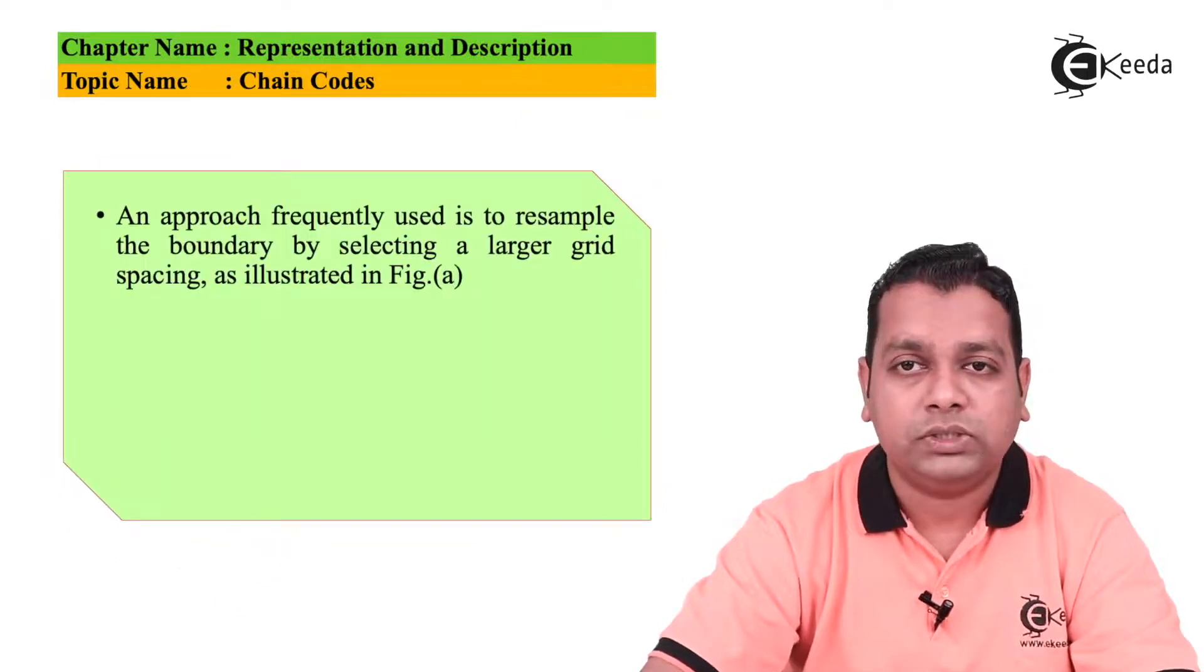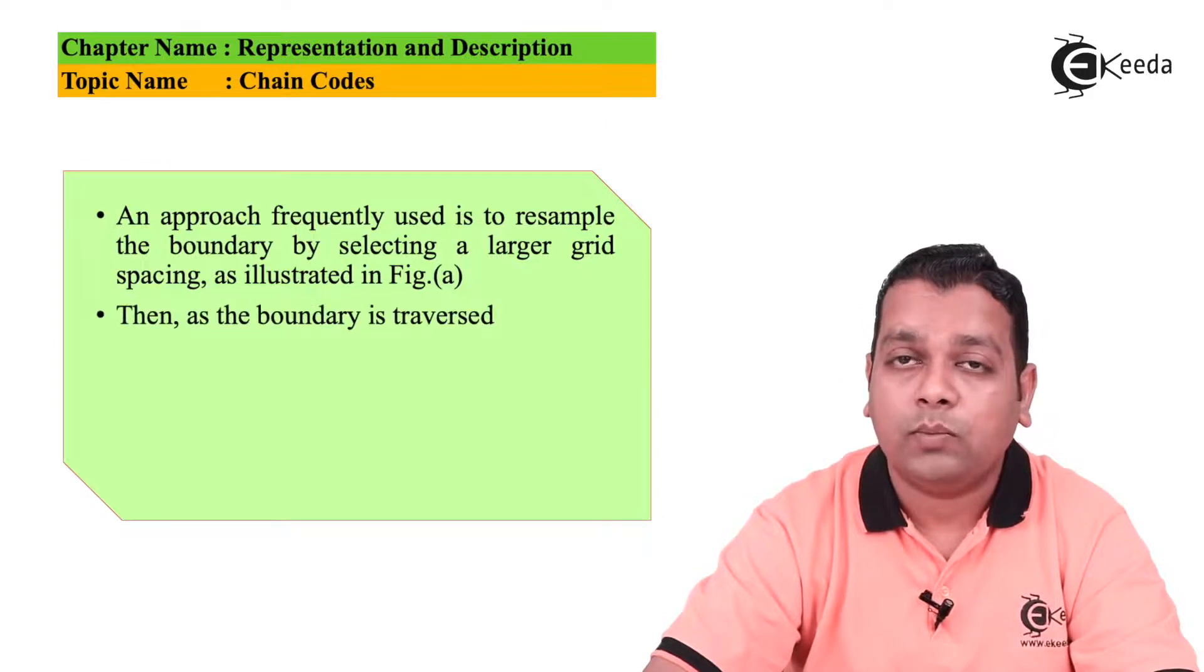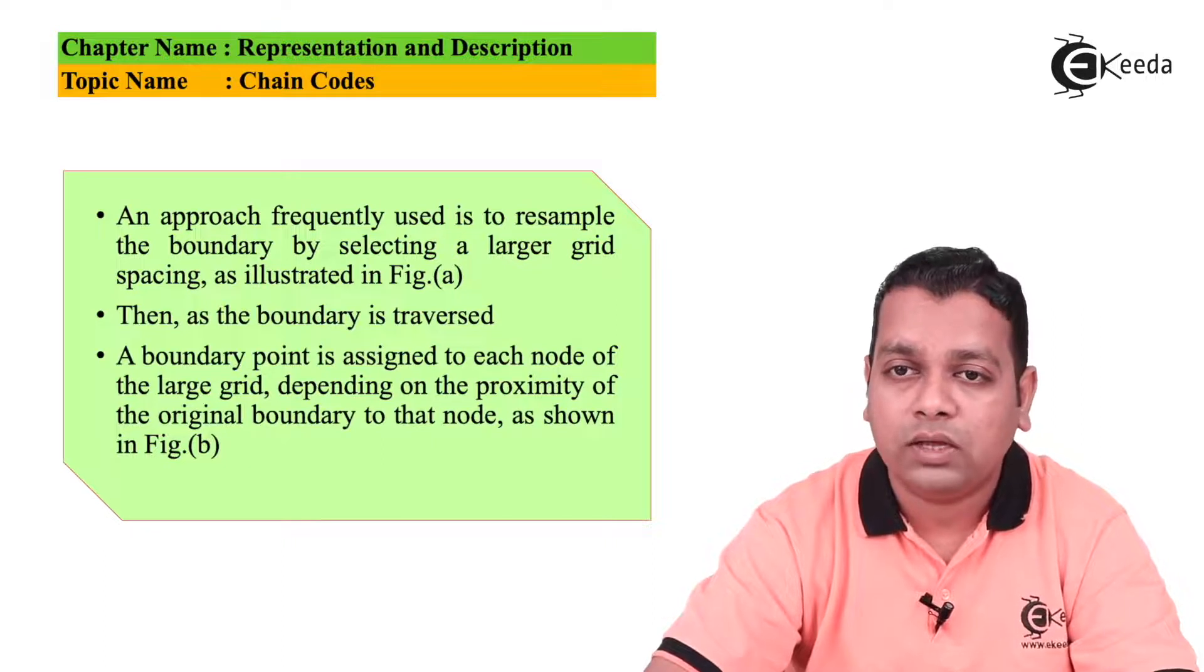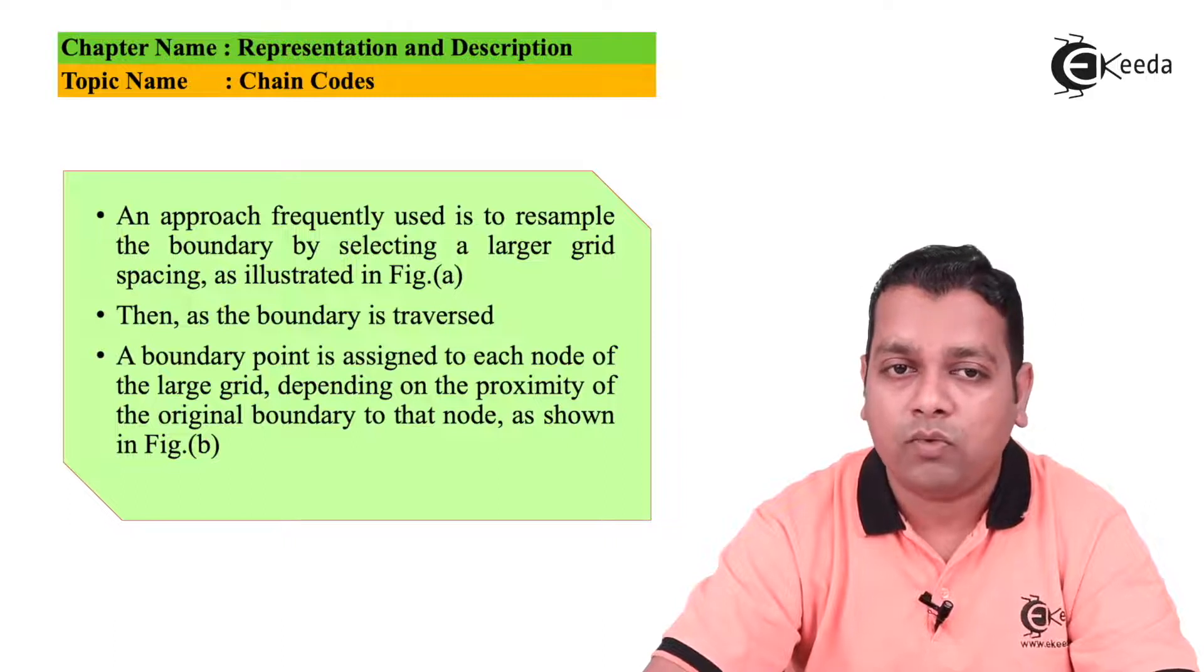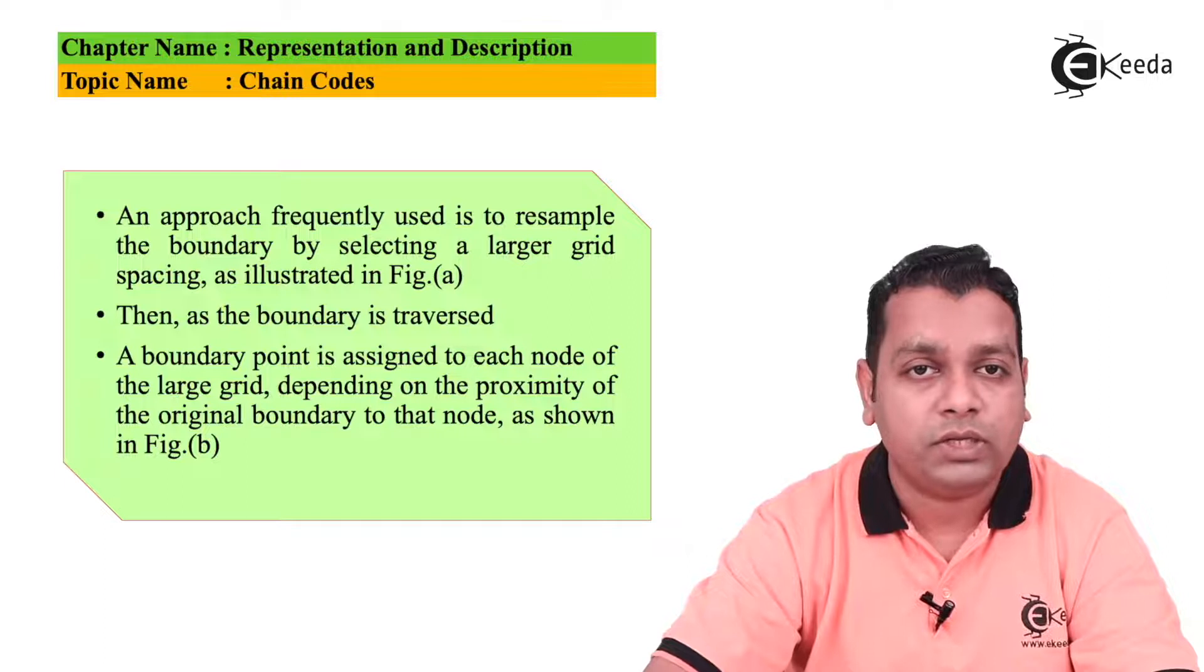An approach frequently used is to resample the boundary by selecting a larger grid spacing that can be illustrated in figure A. Then the boundary is traversed. A boundary point is assigned to each node of the larger grid depending on the proximity of the original boundary to that particular node as shown in the next figure B.